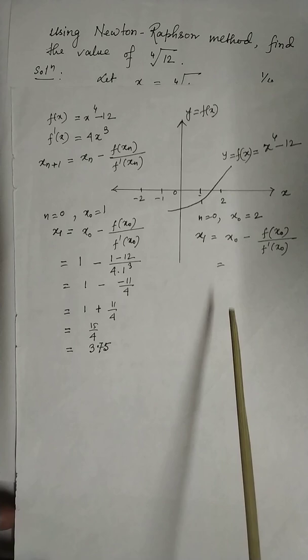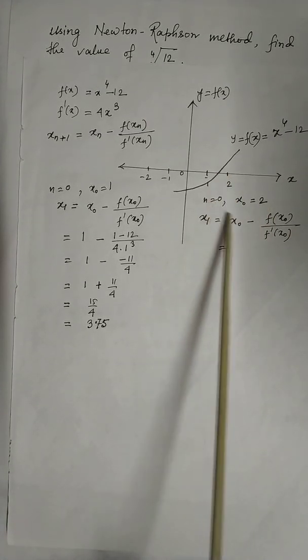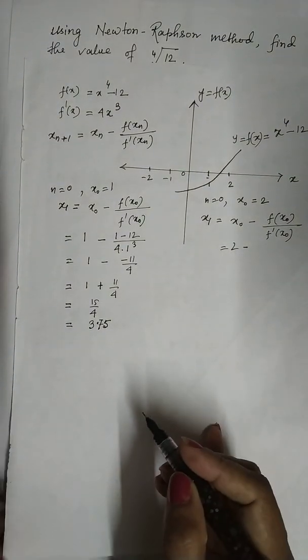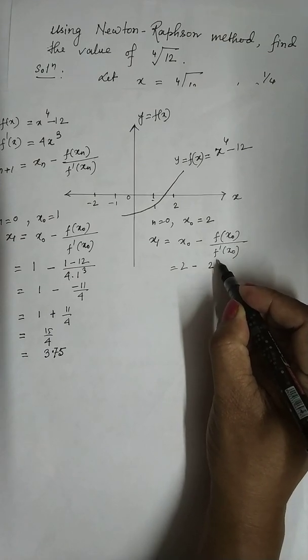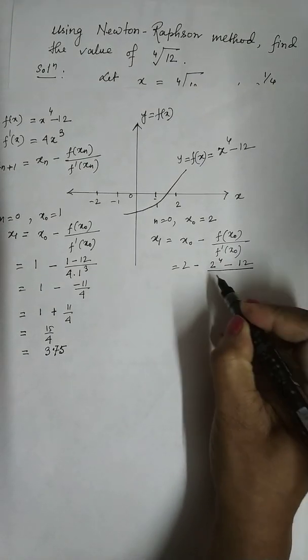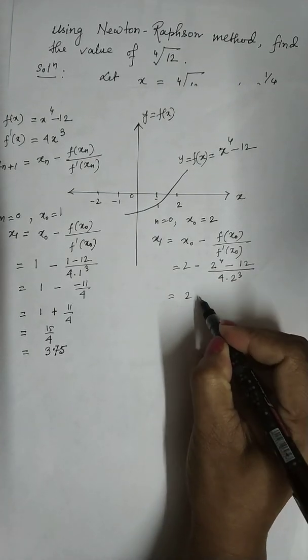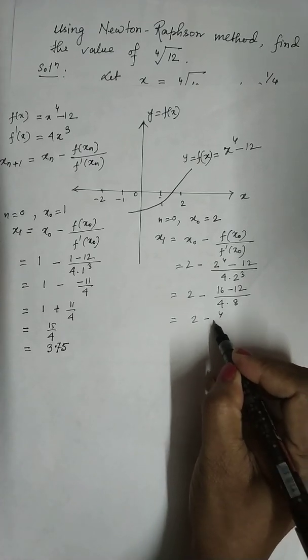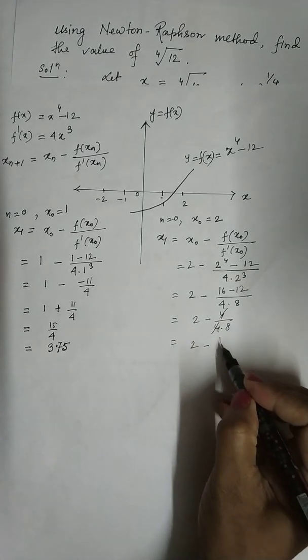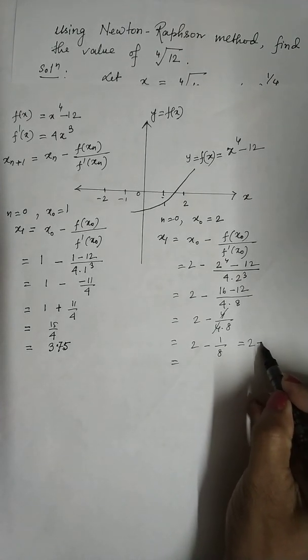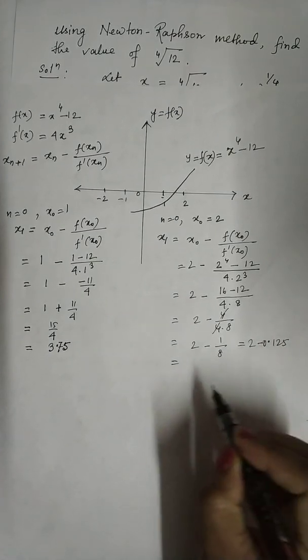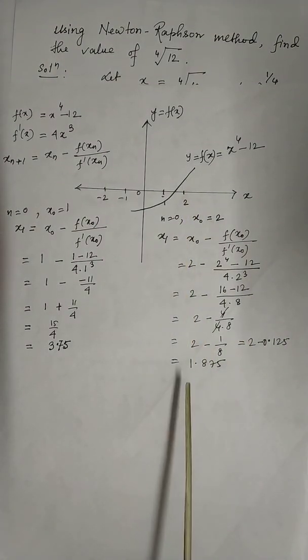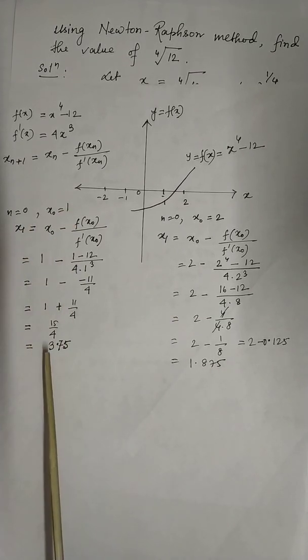Now if you approach from 2 in the same formula, then x_1 will be 2 minus (2⁴ - 12) divided by (4 × 2³). That is 2 minus 4 by 32. That is 2 minus 1 by 8. That is 2 minus 0.125, which equals 1.875. So if you approach from 2, then you are getting 1.875. And if you approach from 1, you are getting 3.75.